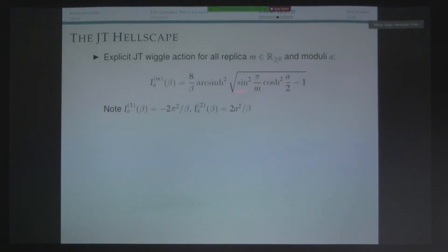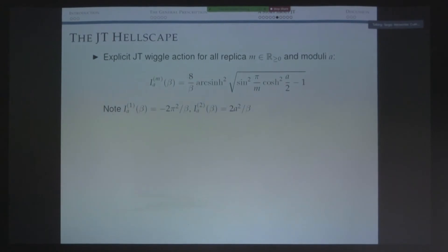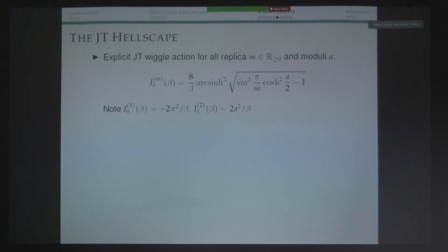As sanity checks: for M equals 1, the action is independent of the modulus — expected, since with no defects the proper separation is meaningless. For M equals 2, there is a quadratic dependence on the proper separation, and the action is minimized by making the separation go to zero — the usual instability of the modulus for the JT double trumpet. Those are the sanity checks. Now we go to the more general M.